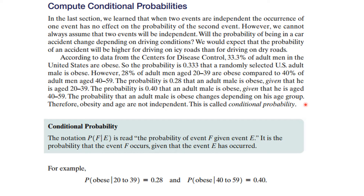This is called a conditional probability — it depends. The notation is the probability of F given E, where the slash is read 'given.' So this is read: the probability of event F given event E is the probability that event F occurs given that event E has occurred. For example, the probability of being obese given that you're in the lower age group is 0.28, and the probability of being obese given the upper age group is 40%.